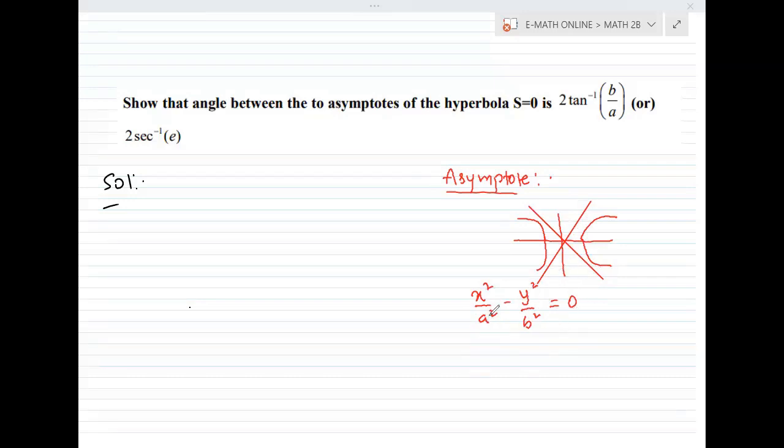The equation of asymptotes is very simple: x square by a square minus y square by b square equal to 0. When y is 0, it passes through the origin, so the constant is 0. This factors as (x/a + y/b)(x/a - y/b) equal to 0.